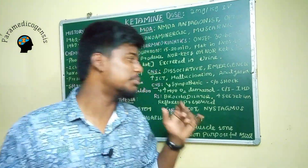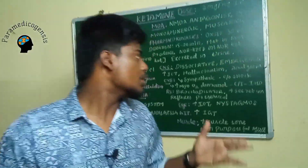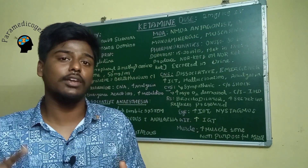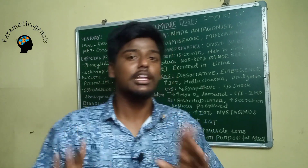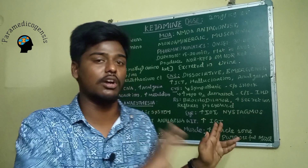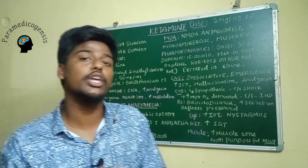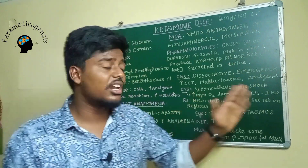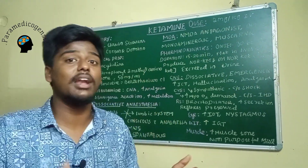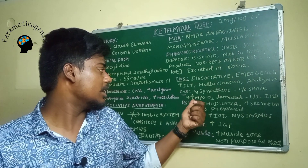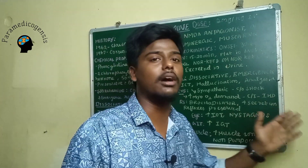In the cardiovascular system, ketamine stimulates the sympathetic system, increasing heart rate and blood pressure. It is the drug of choice for shock patients. However, it increases myocardial O2 demand, so it is contraindicated in ischemic heart disease patients, where there is already a demand-supply mismatch.